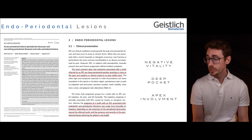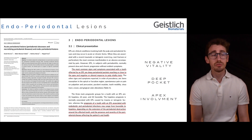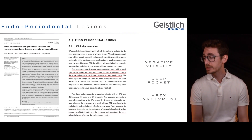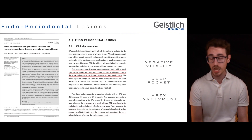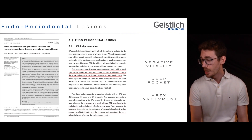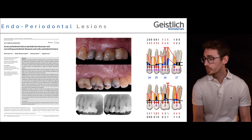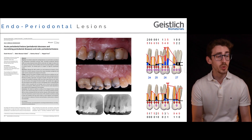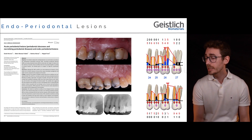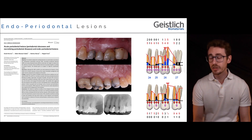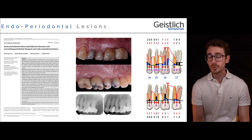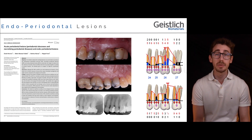Clinically, we are talking about a tooth or root that responds in a negative or altered way to the pulp vitality test, which presents a deep pocket commonly extending up to the root apex, and where the combination of these conditions most commonly results in an unfavorable or hopeless prognosis. This is the situation of today's case, where at tooth number 26, the upper left first molar, we can appreciate a deep pocket affecting the distal root, combined with a negative response to the vitality test and a radiographic image compatible with a periapical lesion.